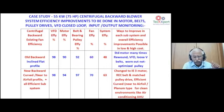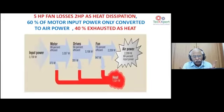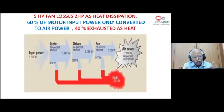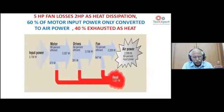This applies not just to the 55 kW machine. Even on a 5 HP blower, losses are significant: 60% of motor input power converts to air power, while 40% is dissipated as heat. With 3.7 kW input, motor output is ~3.3 kW, drive output ~3.2 kW, and after the fan at ~70% efficiency, only 2.2 kW of air output remains — a 1 kW loss in the fan itself, with 1.5 kW total heat loss.